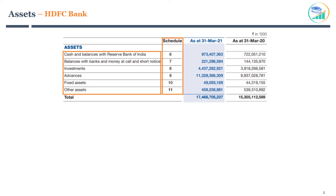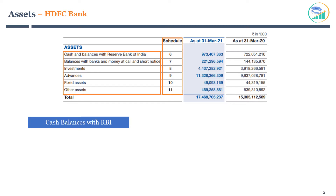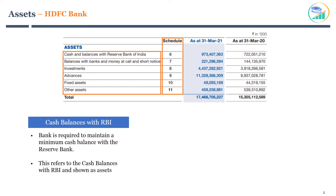Starting with cash and balances with the Reserve Bank of India. Every bank is required to maintain a certain minimum cash balance with the Reserve Bank. This refers to the cash balances held with the Reserve Bank, and it is shown as an asset.